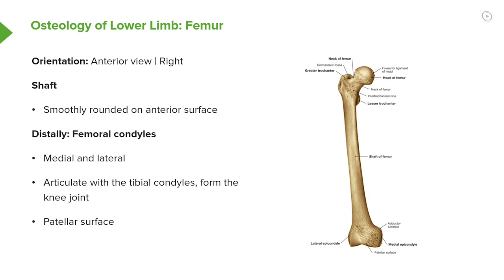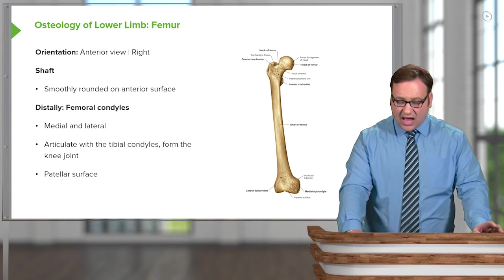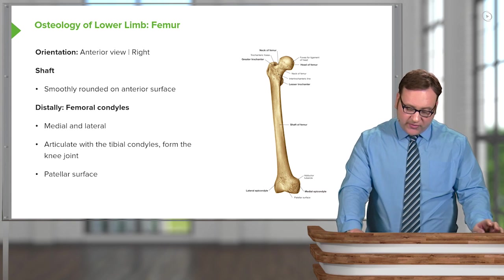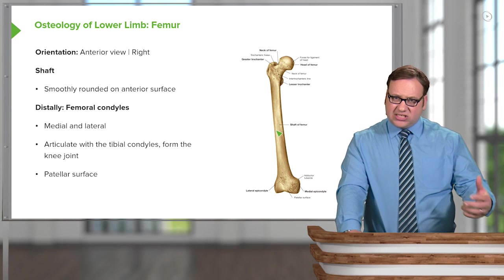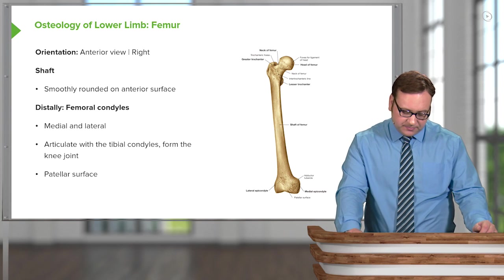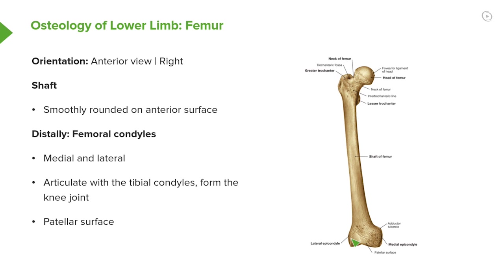If we look at the shaft, it's relatively smooth and rounded on the anterior surface. Posteriorly there are some features we'll mention. Distally on this anterior surface we can see some femoral condyles, and we can also see the medial and lateral epicondyles passing towards these condyles, which articulate with the tibial condyles to form the knee joint. We can also see a smooth region here which is the patellar surface.